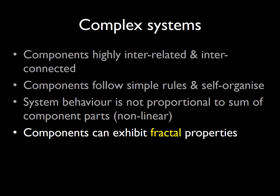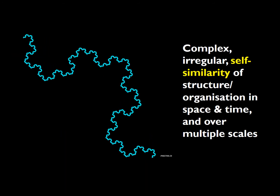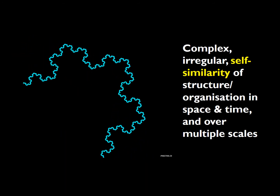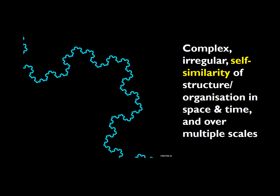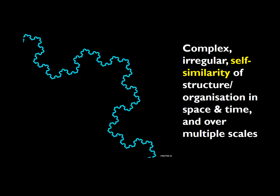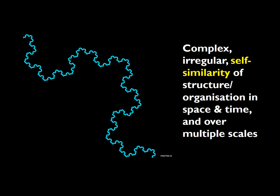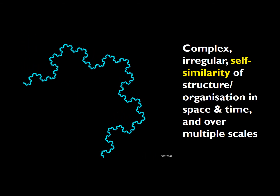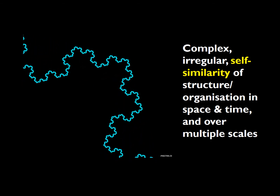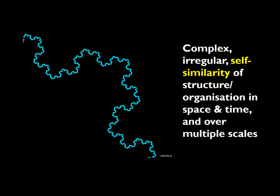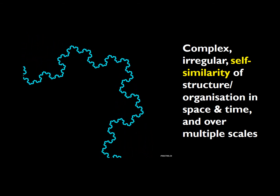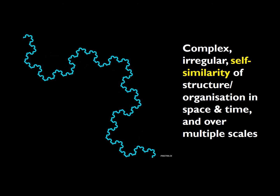Another feature of complex physiological systems is that component parts often exhibit what is called fractal properties. Fractals are complex irregular entities that display self-similarity of their physical structure or organization in space and time and over multiple scales. The image on the left illustrates self-similarity of shape over multiple scales. As one part is magnified, it reveals an identical smaller version of itself.